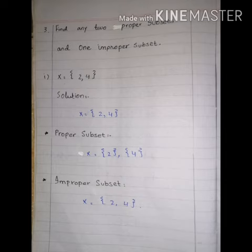We will write proper subsets as {2} and {4}, because we have elements in the original set, only 2 and 4. So one set will contain 2 and one set will contain 4. Here we have one element in each set. These are proper subsets.